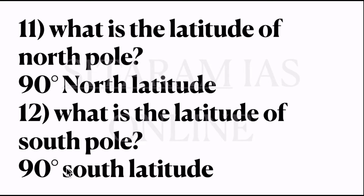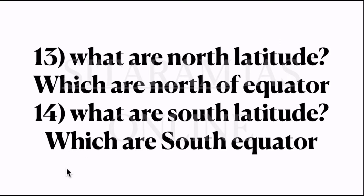Eleventh question: what is the latitude of the north pole? It is 90 degrees north latitude. Twelfth question: what is the latitude of the south pole? It is 90 degrees south latitude. Thirteenth question: what are north latitudes? The latitudes which are north of the equator are called north latitudes. And fourteenth question: what are south latitudes? The latitudes which are south of the equator are called south latitudes.